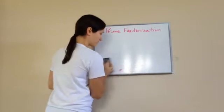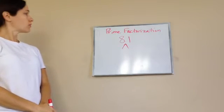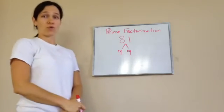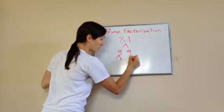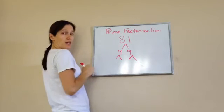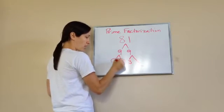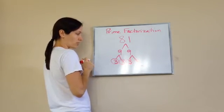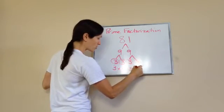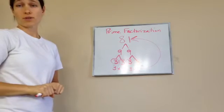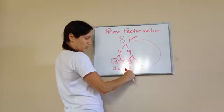Let's try another one — 81. Nine times nine equals 81, but are we done? Have we reached prime factors? No. So we need to break down 9. What numbers will go into 9? Three times three. Same thing with this other 9 — three times three. All of these are prime factors, so I'm going to circle them indicating that I'm done. The final answer is 3 times 3 times 3 times 3. You could write 3 to the fourth, and you'll learn that later. 3 times 3 is 9, 9 times 3 is 27, and 27 times 3 is 81.